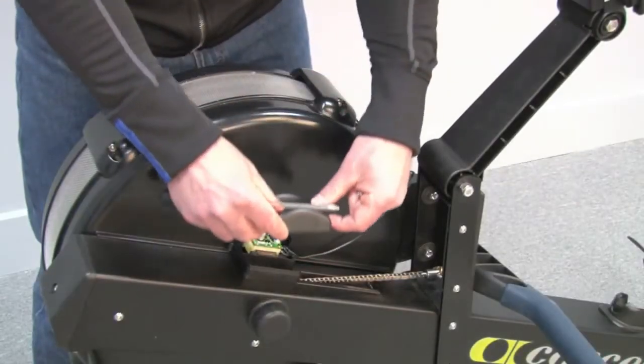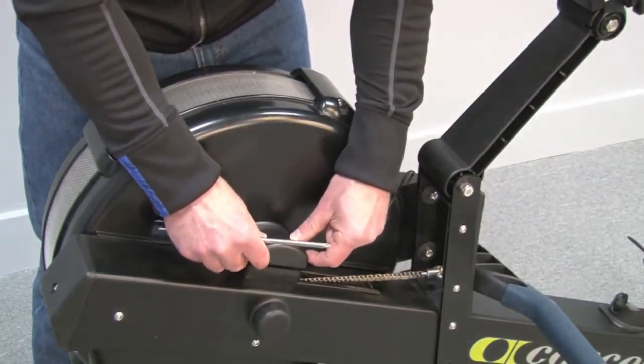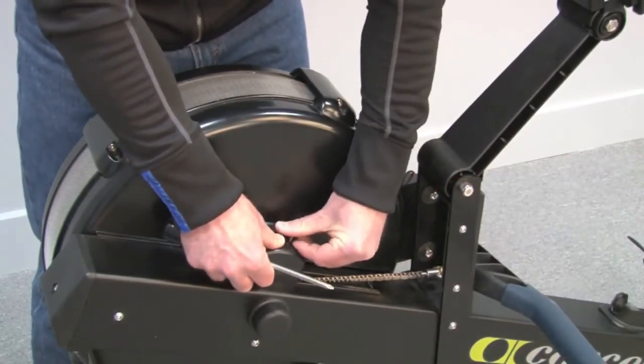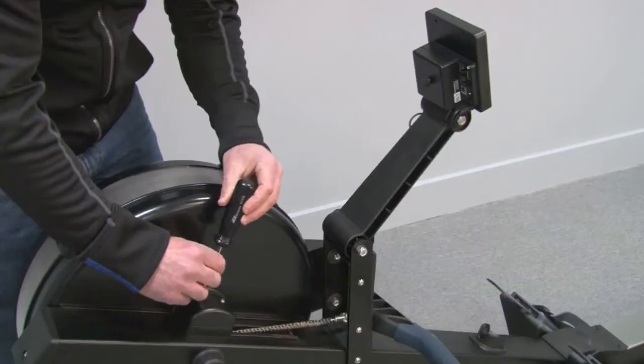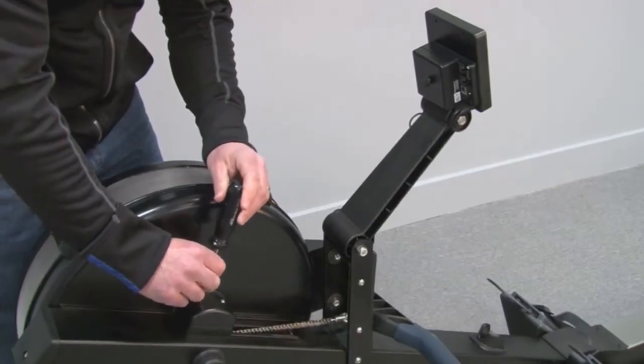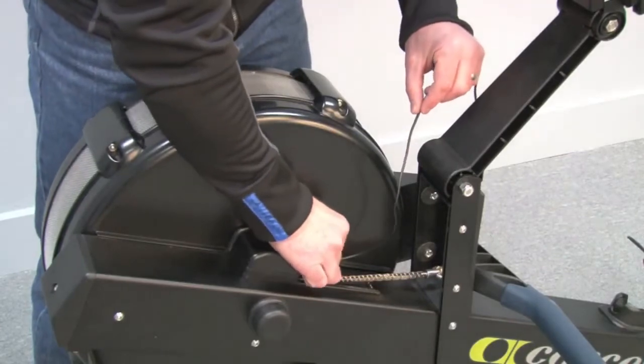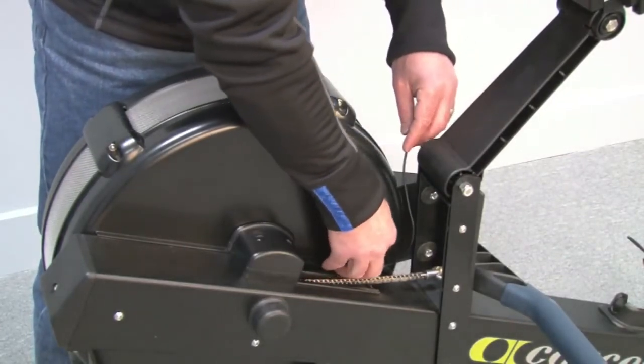Now replace the cover and the two screws that hold it down. Now that the cover is back on, we're going to route the wire the same way it was removed.